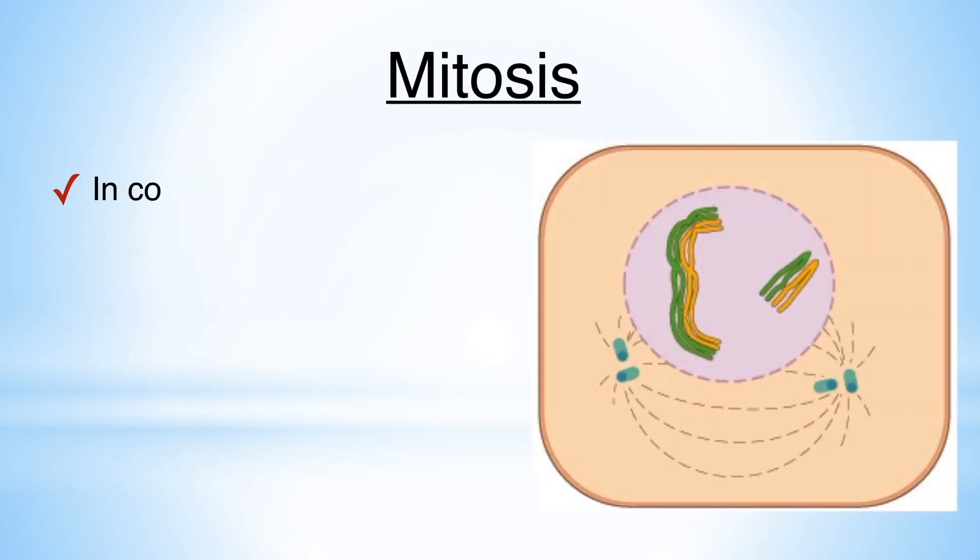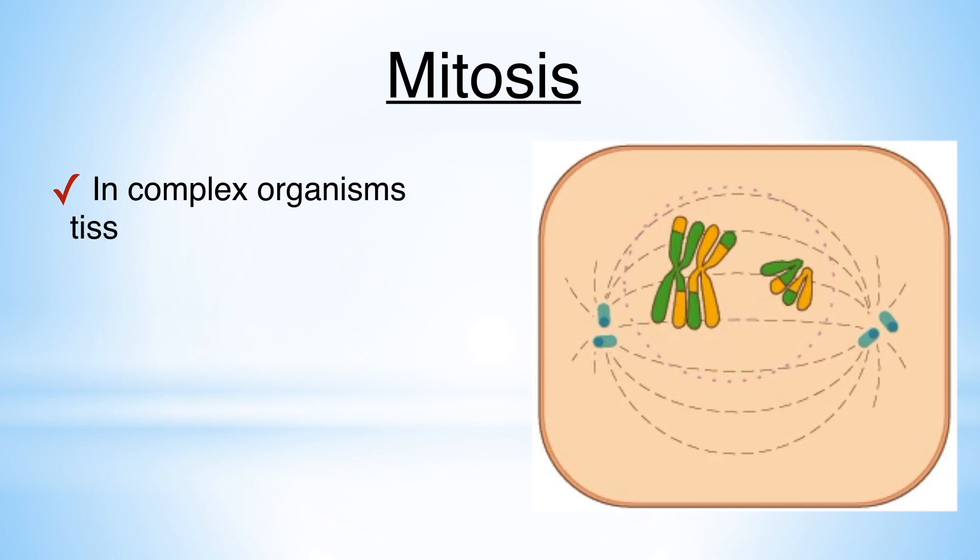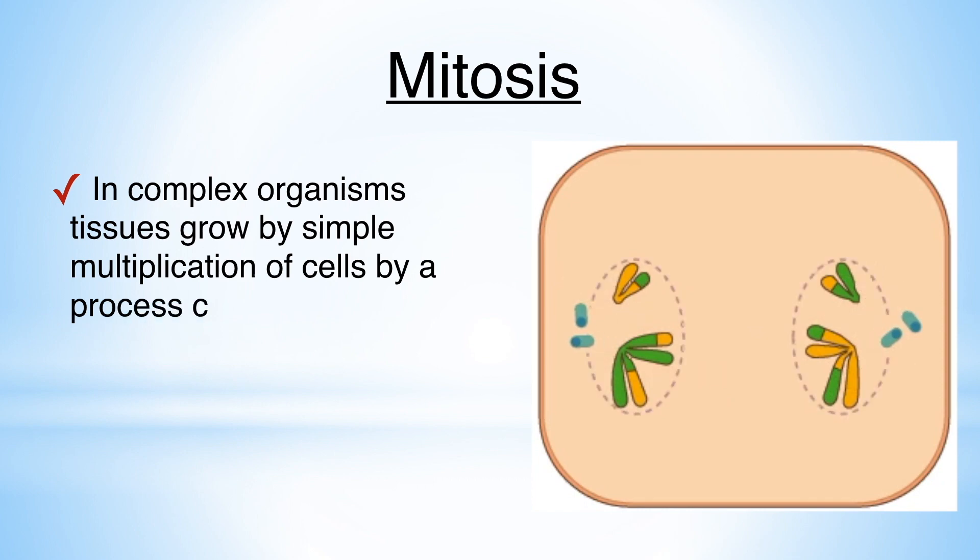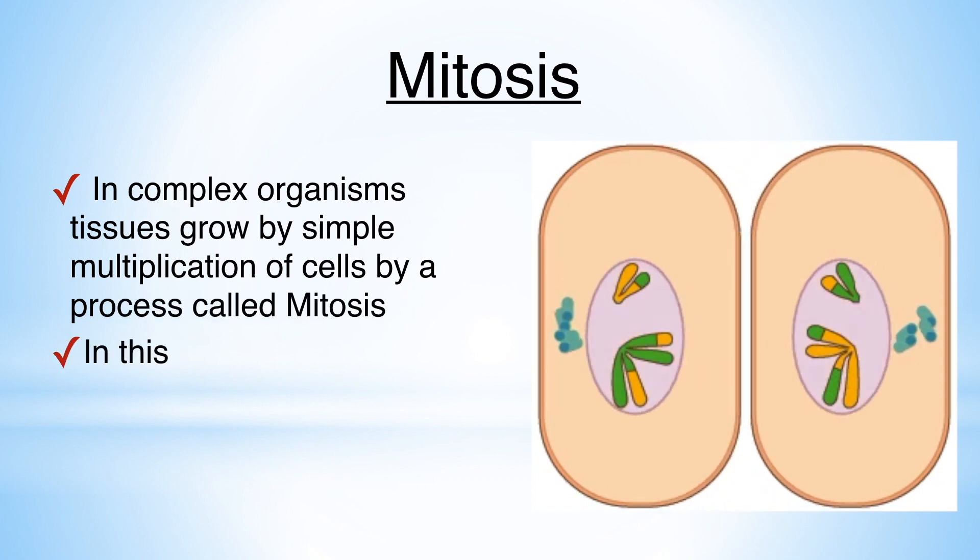Mitosis. In complex organisms, tissues grow by simple multiplication of cells by a process called mitosis. In this process, the parent cell breaks down into two daughter cells that are identical to it.